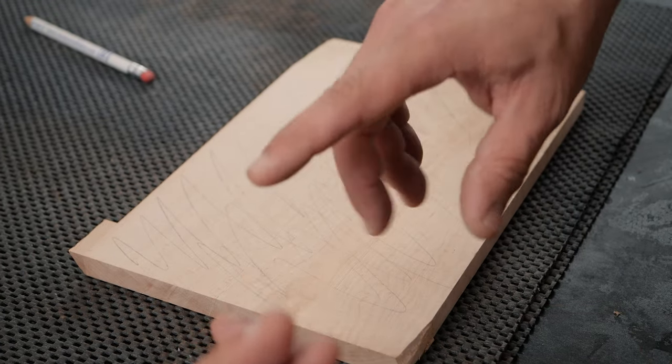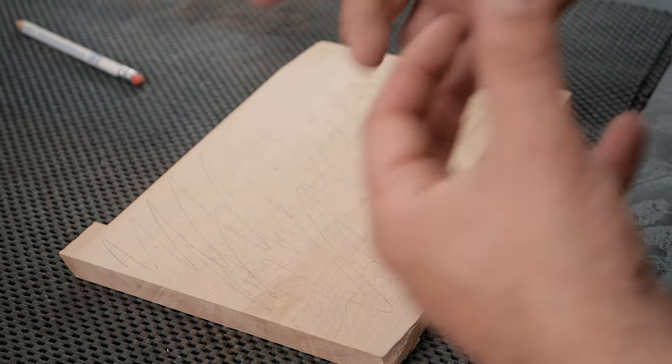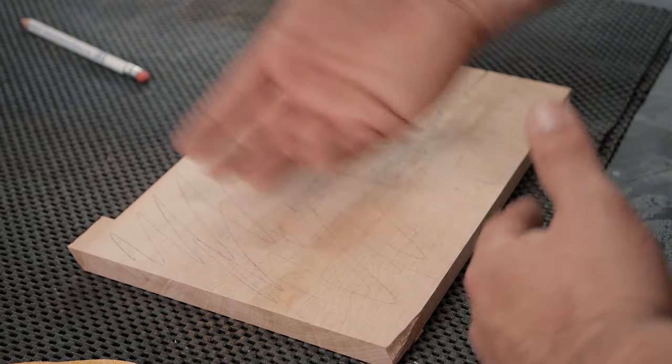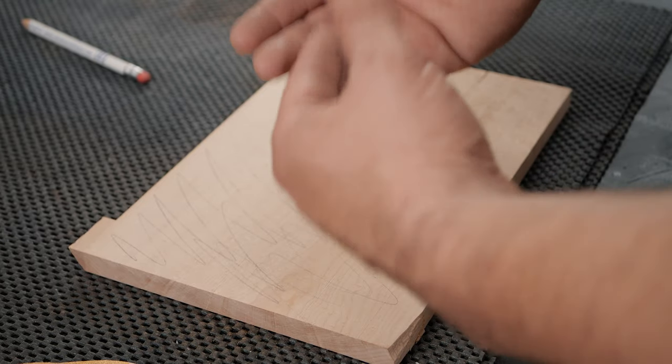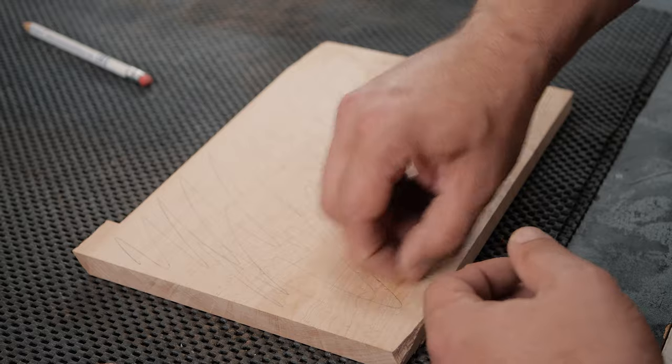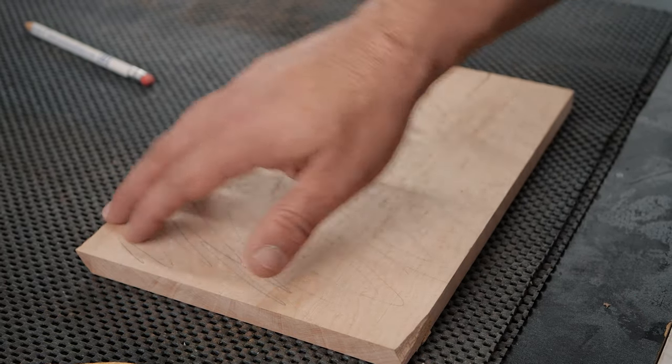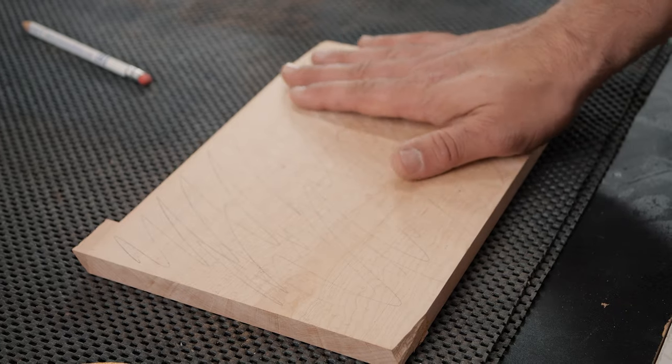Once you draw your pencil on, you're going to go ahead and start with 80-grit. I like to go 80, 120, 150, 180, 220. The reason you don't skip way higher to a grit is if you go from 120 to 220, the 220 is not going to be able to remove the scratch patterns from 120. So what you want to do is just sand until the pencil's gone with each grit.